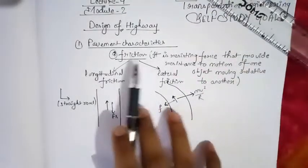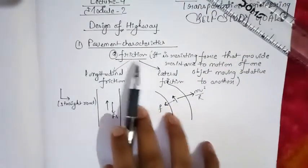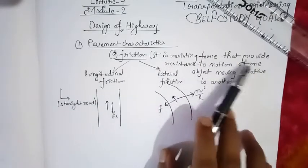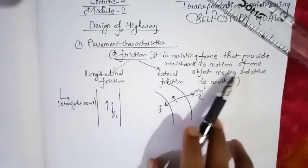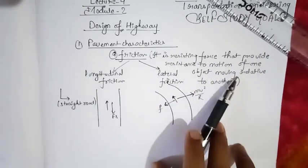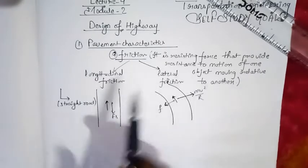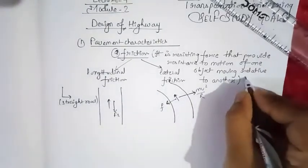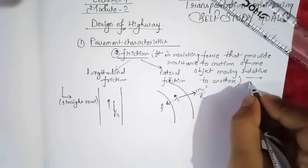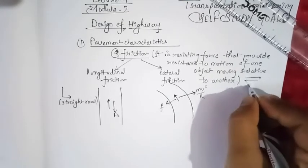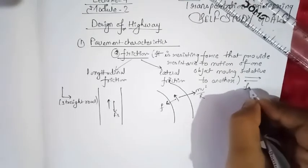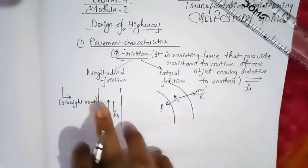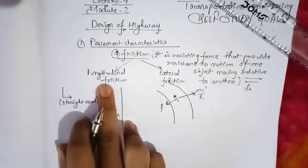So what is friction? We all know that friction is a resisting force that provides resistance to the motion of an object moving relative to another. If the object is moving in one direction, the frictional force acts opposite to that direction of motion. Friction is divided into two parts: friction acting longitudinally is known as longitudinal friction, and friction acting laterally is known as lateral friction.